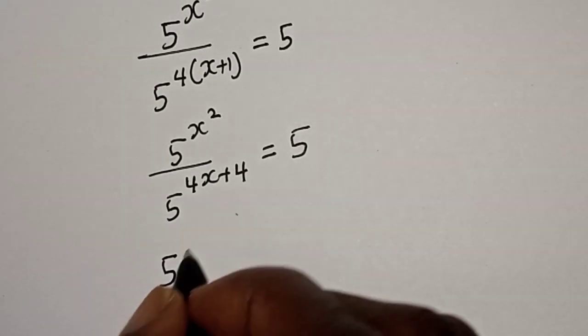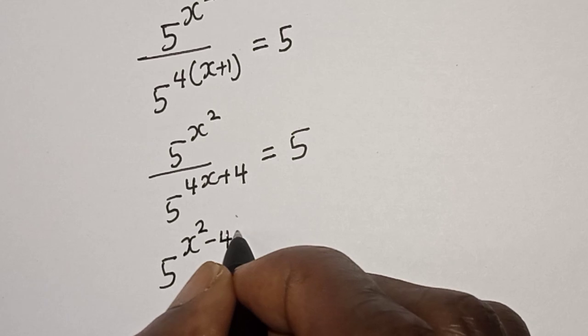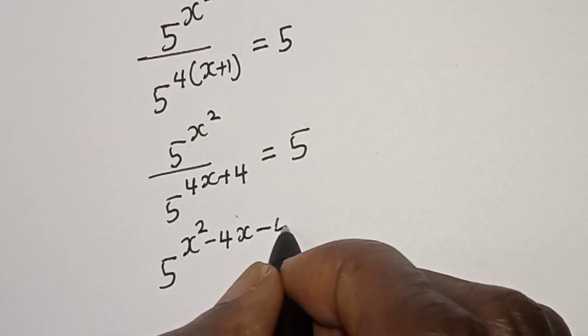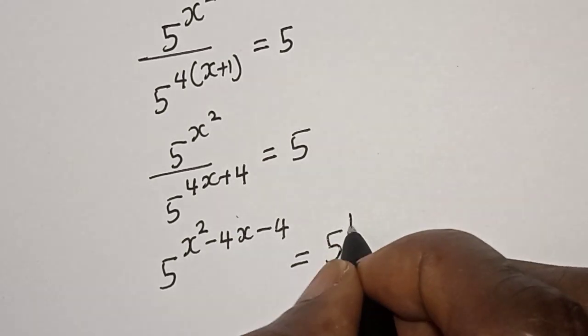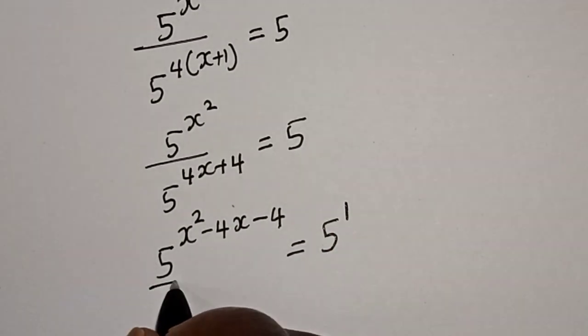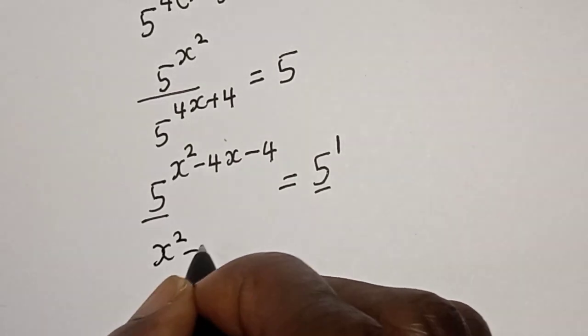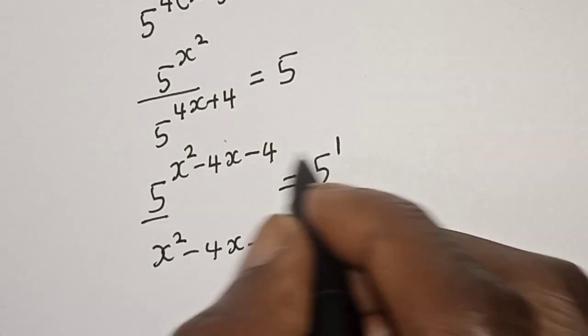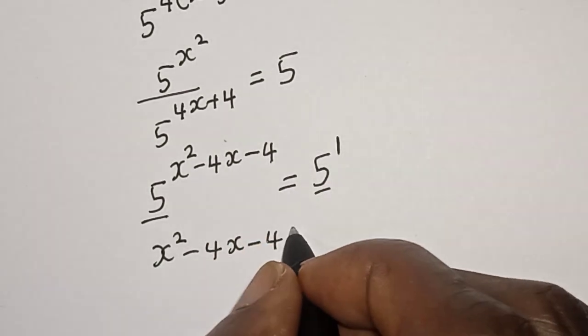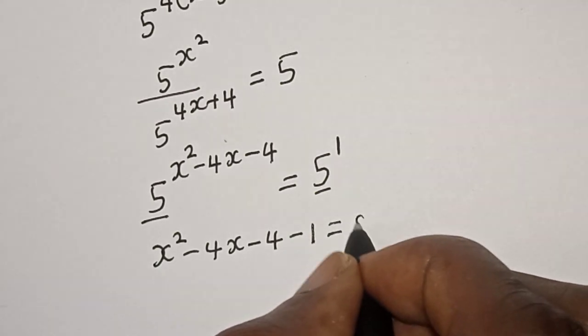Then this can be written as 5 raised to power s squared minus 4s minus 4 is equal to 5 raised to power 1. They have the same base 5, then we have s squared minus 4s minus 4. If this one crosses to the other side, it becomes minus 1, is equal to zero.